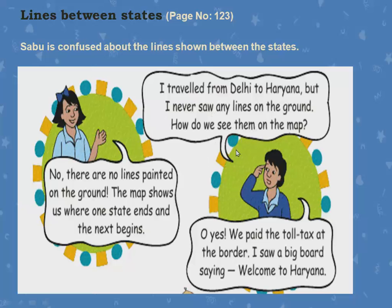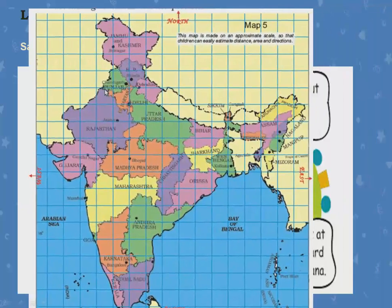The girl answers: 'No, there are no lines painted on the ground. The map shows us where one state ends and the next state begins.' Yes, we paid the toll tax at the border — I saw a big board saying 'Welcome to Haryana.' When we go from one state to another, we have to pay toll tax because we are crossing the border. From the other side, you can see 'Welcome to Delhi.'